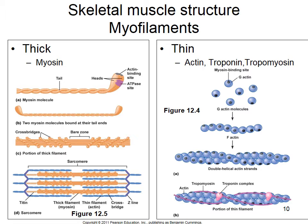Troponin has a calcium binding site. When calcium is released from the sarcoplasmic reticulum, some troponin molecules will move tropomyosin off the binding sites depending on how much calcium is released. A weak contraction releases less calcium, activating fewer binding sites. An intense contraction releases a lot of calcium, activating all binding sites. When muscles relax, all binding sites are covered.